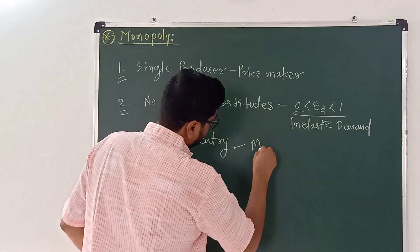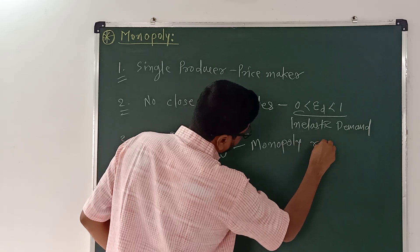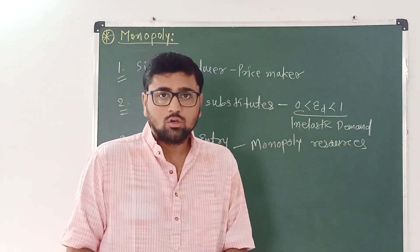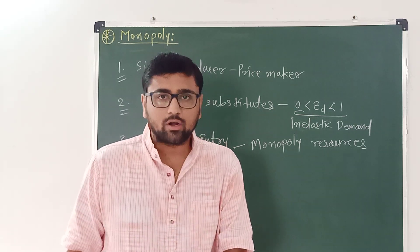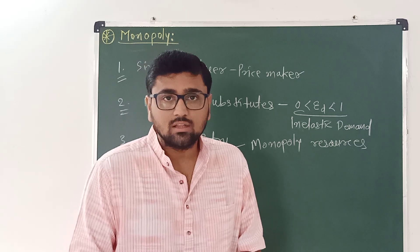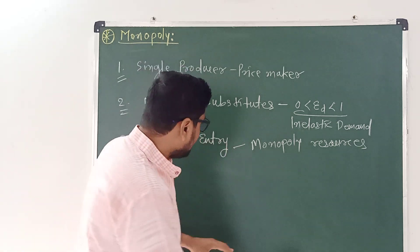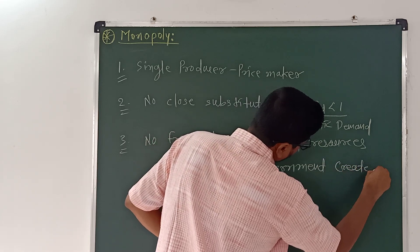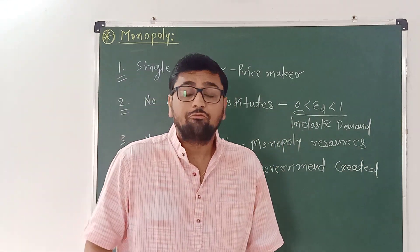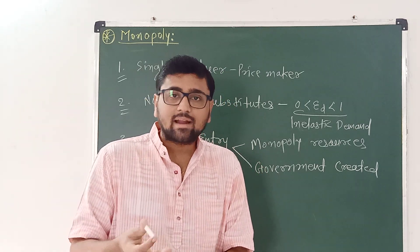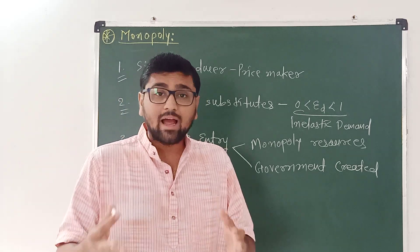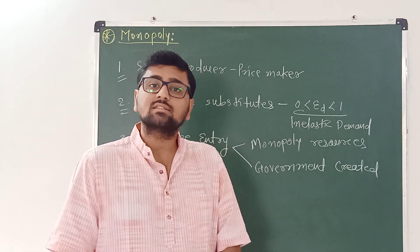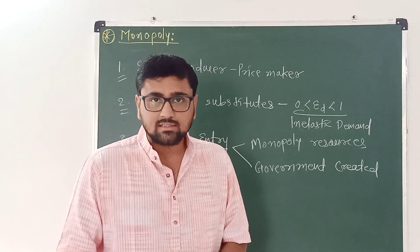The first reason is monopoly resources. A firm has a monopoly over the resources used in the production of the commodity, and that creates the monopoly of the firm in the entire market. Second is government-created monopoly. For example, in Ahmedabad, only Torrent Power provides electricity to citizens. This restriction or barrier is created by the government, and that is why Torrent Power has the monopoly to provide electricity to citizens.